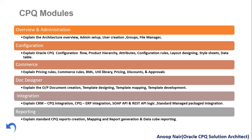Next is commerce. Commerce specifically explains about pricing, discounting, and approvals — how the approvals and discounting activity can be developed in CPQ. Once the configuration and commerce parts are done, we cover how the output document can be developed: how a template can be created, how it can be developed, and how it can be mapped to particular actions to get the output document when you perform those actions.